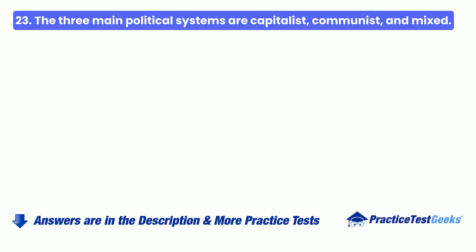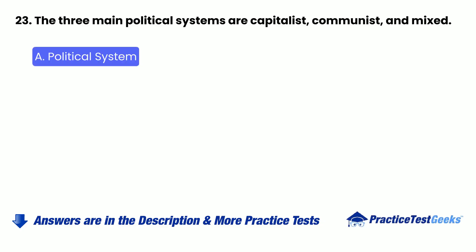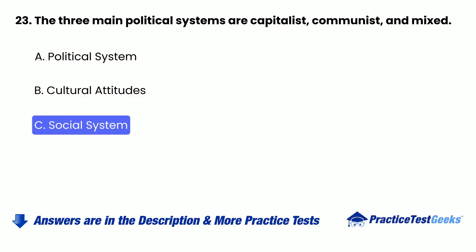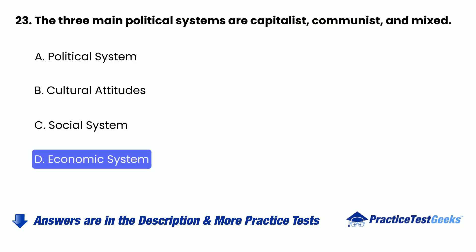Question 23: The three main political systems are capitalist, communist, and mixed — A. Political system, B. Cultural attitudes, C. Social system, D. Economic system.